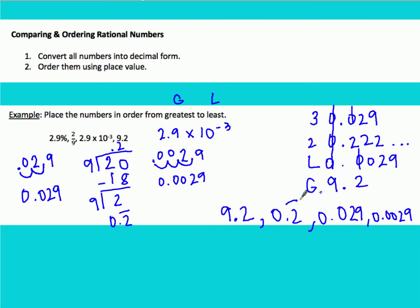You can also think about this in terms of money. 9.2 would be $9.20 — clearly the greatest. The second place number is about $0.22. The third is almost $0.03. And the lowest isn't even a full cent. So that's another way to think about it if it helps you.